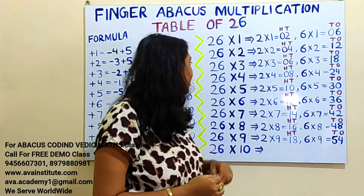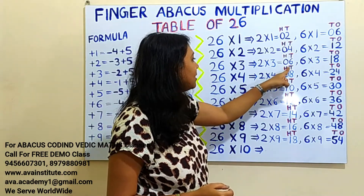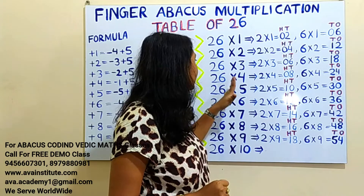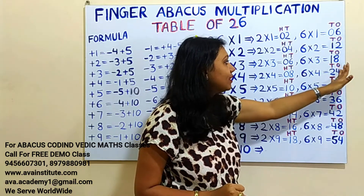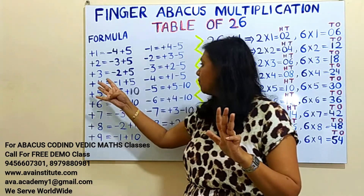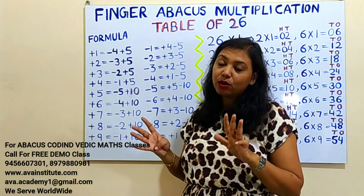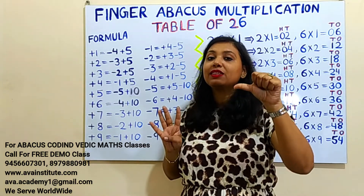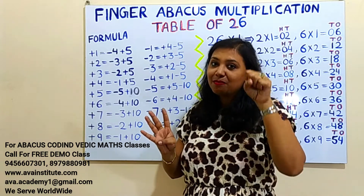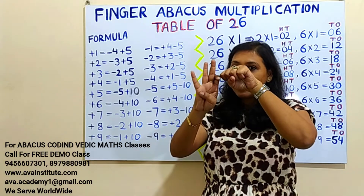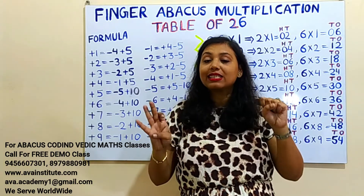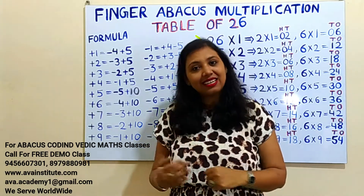26 fours are: 2 fours are 8 — in hundreds 0, in tens 0, in ones 8. Now 6 fours are 24 — in tens 20, in ones 4. We can add 4 easily. How to add 20? The plus 2 formula is 10 minus 3 plus 5, so plus 20 formula is minus 30 plus 50. Now plus 50 is not possible because 50 is already open, so plus 5 formula is minus 5 plus 10, meaning plus 50 formula is minus 50 plus 100. The answer is 104.